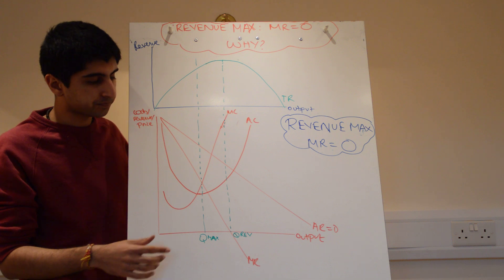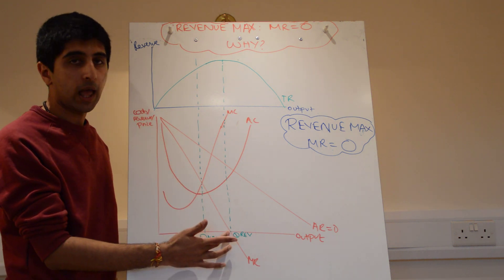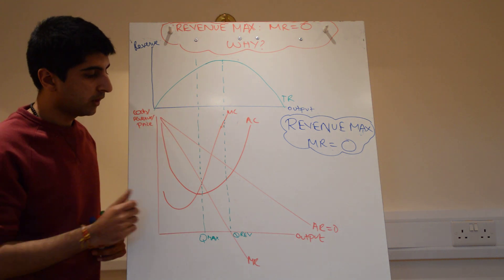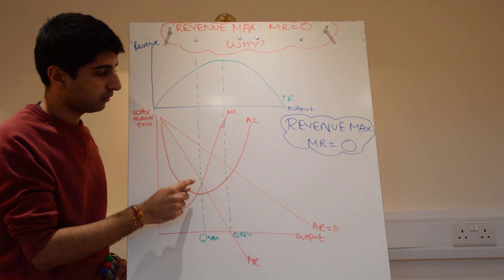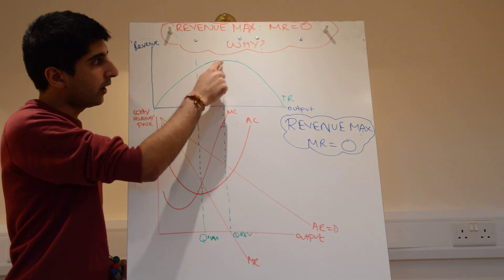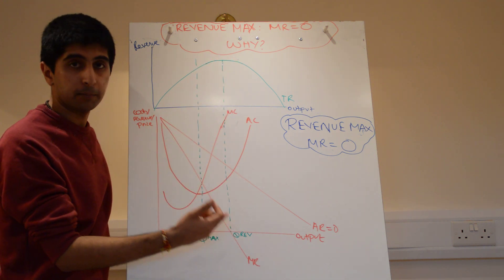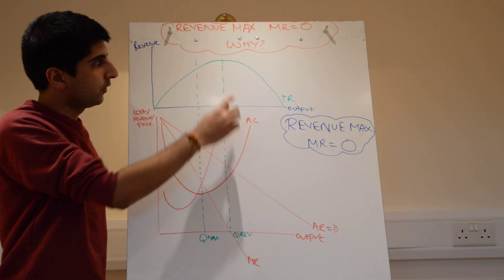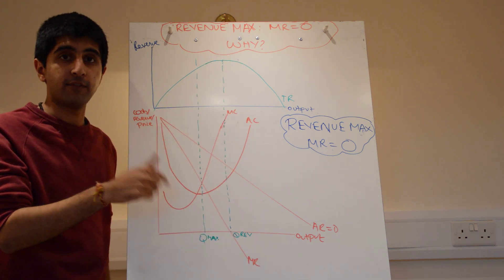Thereafter, we're reducing revenue. So we can maximise total revenue where MR is zero for that reason. We can see that on the diagram. Total revenue is increasing while marginal revenue is positive, but where it's maximised is where MR is zero. Thereafter, as we've said, marginal revenue is negative and our total revenue starts to fall. So the maximisation of total revenue occurs when marginal revenue is zero.